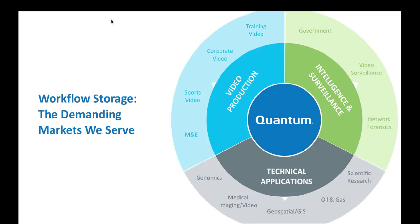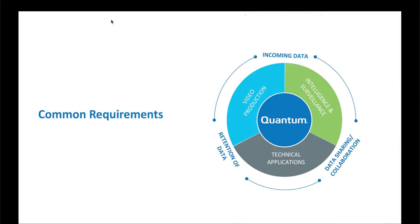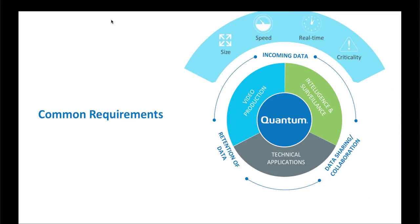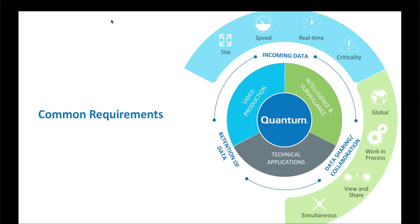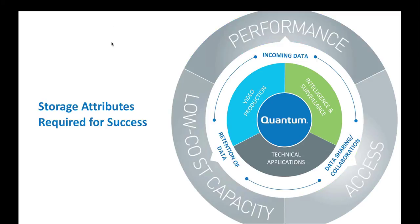On the technical side: genomics, medical imaging, geospatial, oil and gas, scientific research — all areas that need high-speed intelligent data storage. They all share the same needs: data sharing, collaboration, and retention of data, which is why Quantum fits all of them. It's about size, speed, and real-time analytics. From there, it grows into globally replicating data in multiple locations, sharing simultaneously with users in different locations, and analyzing and drawing value from that data. The right storage can help you make money, not just spend money.